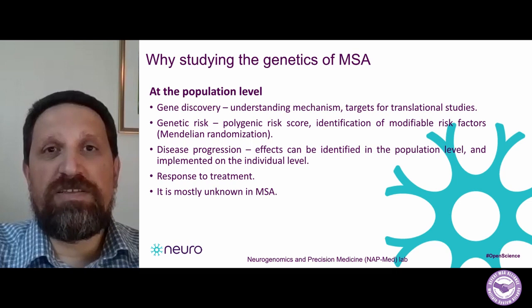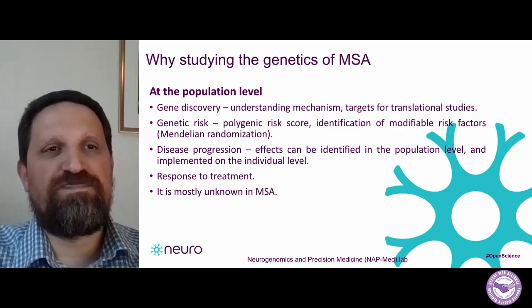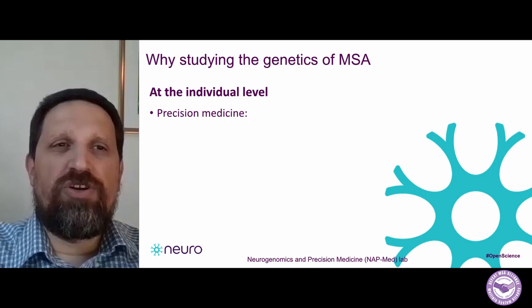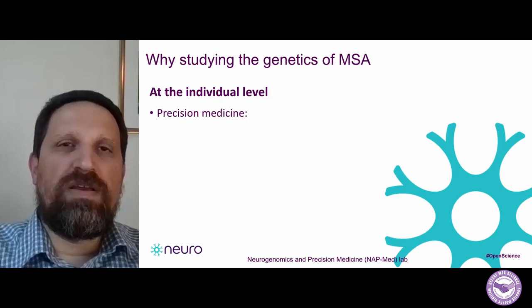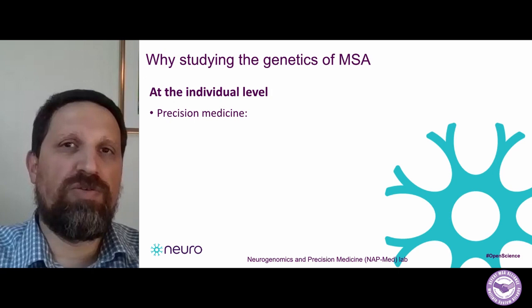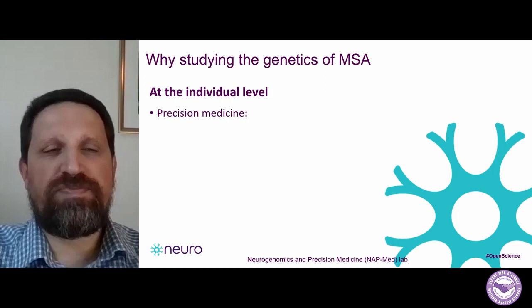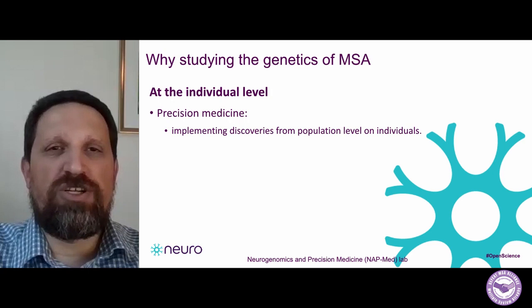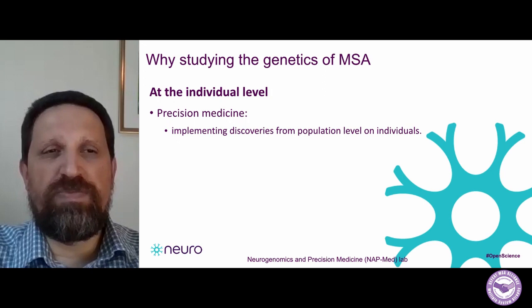And maybe the most important reason why we want to study the genetics of MSA is that it is mostly unknown, as you will see in the second part of this talk. At the individual level, precision medicine basically means that we give a treatment specific for a specific individual based on who they are — based on their genetics, based on other factors in their lives — and try to match the best treatment to each individual. We can identify different mutations and genes that are specifically important in specific individuals and tailor treatments based on that.